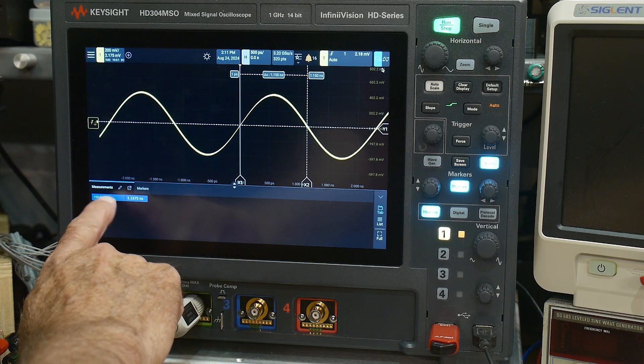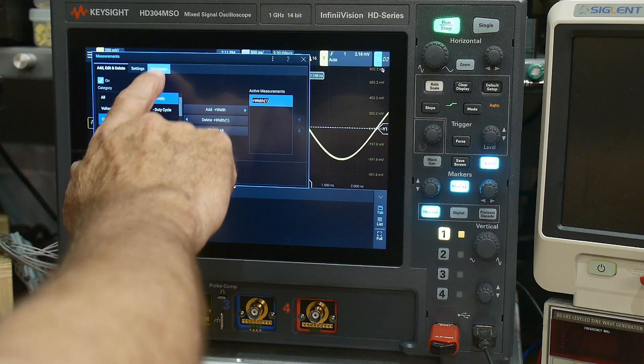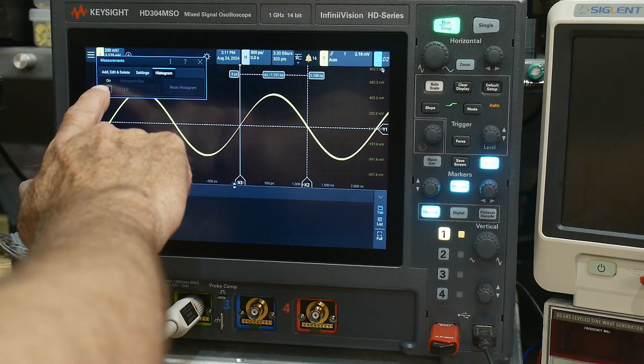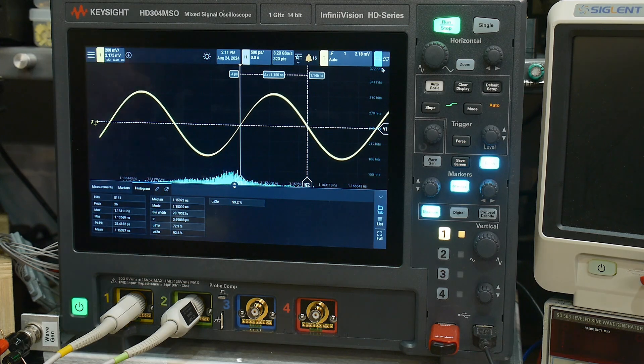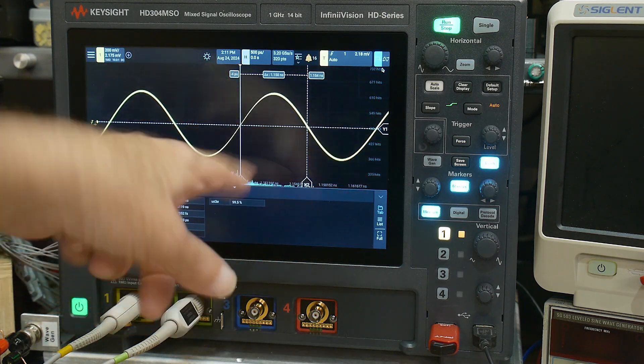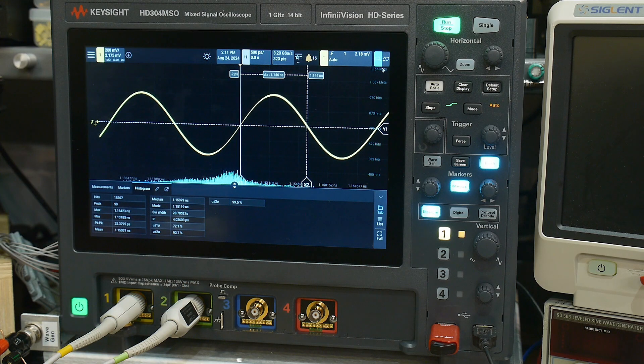So we need to add some statistics to that. Histogram. Turn on the histogram. Now it's going to be starting to look at some jitter data, okay? And it will build up a histogram here.